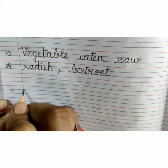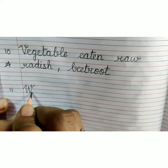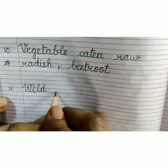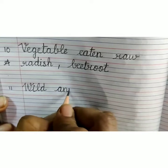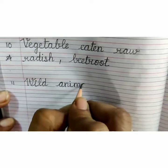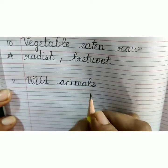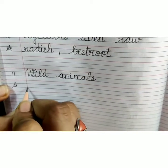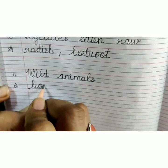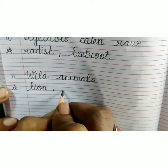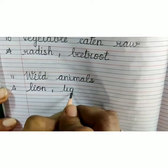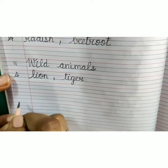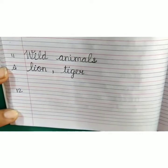Leave one line, write number 11. Capital W-I-L-D, wild, A-N-I-M-A-L-S, wild animals. Answer: L-I-O-N, lion, comma, T-I-G-E-R, tiger. Leave one line, write number 12.